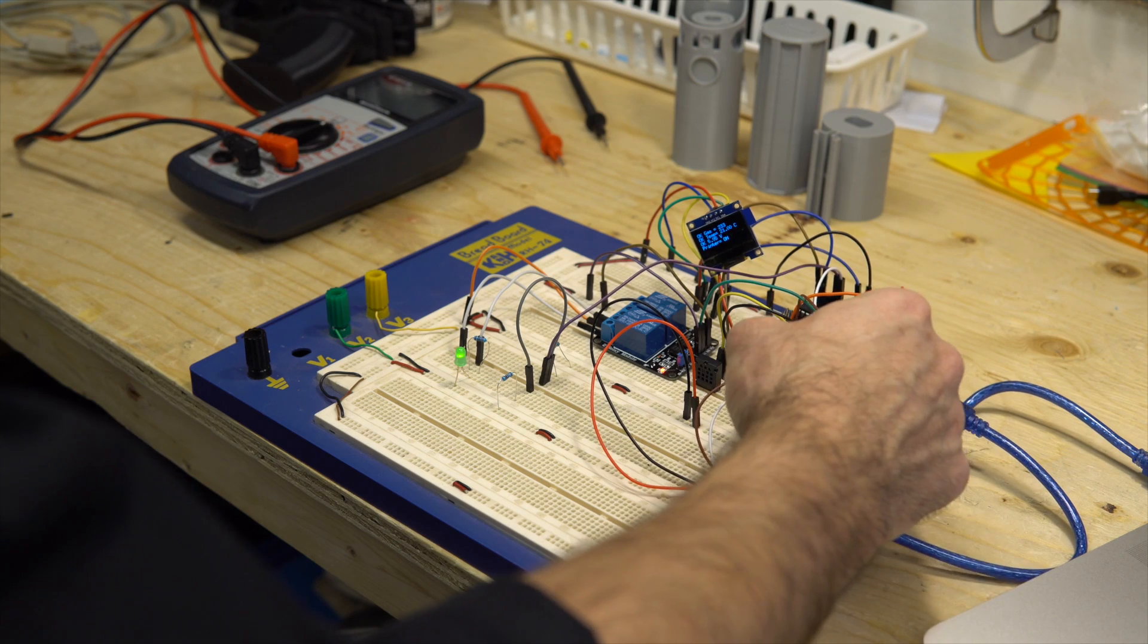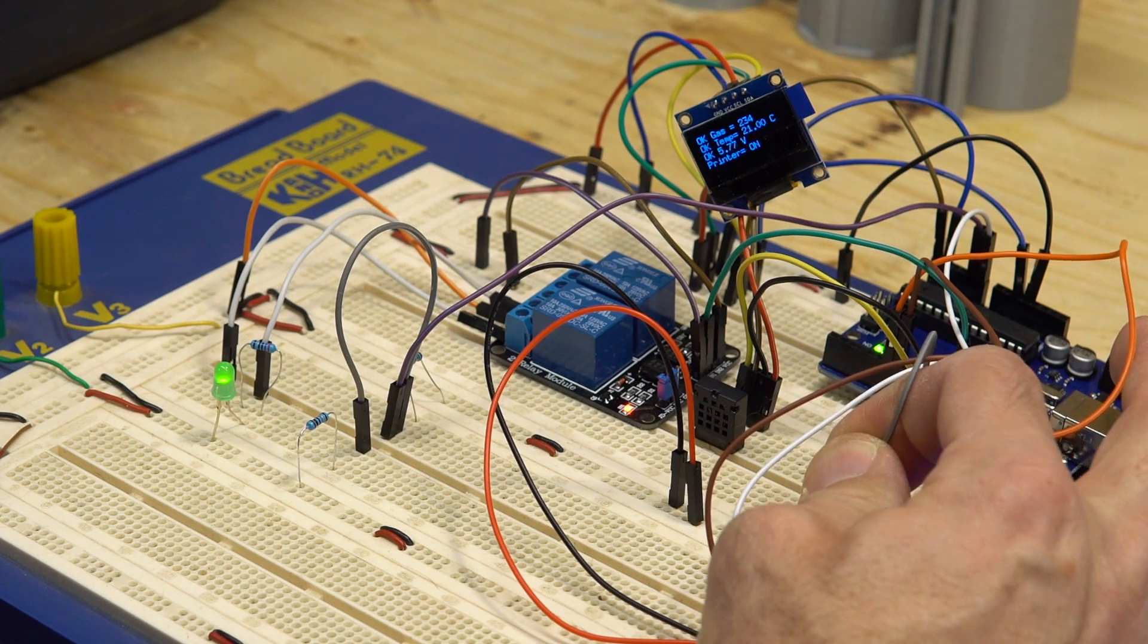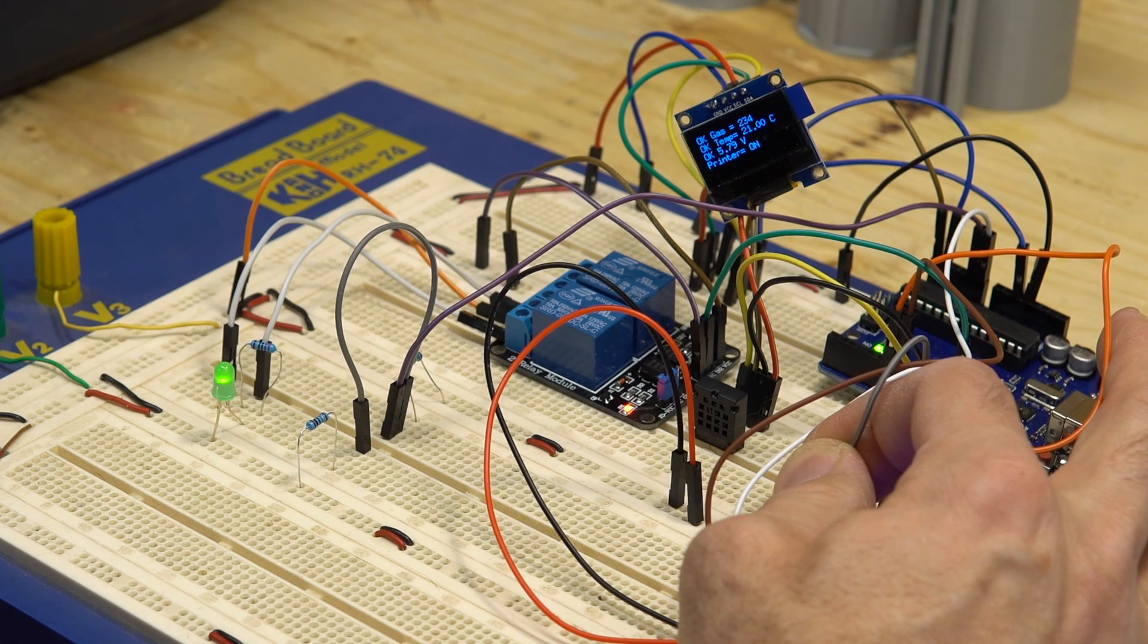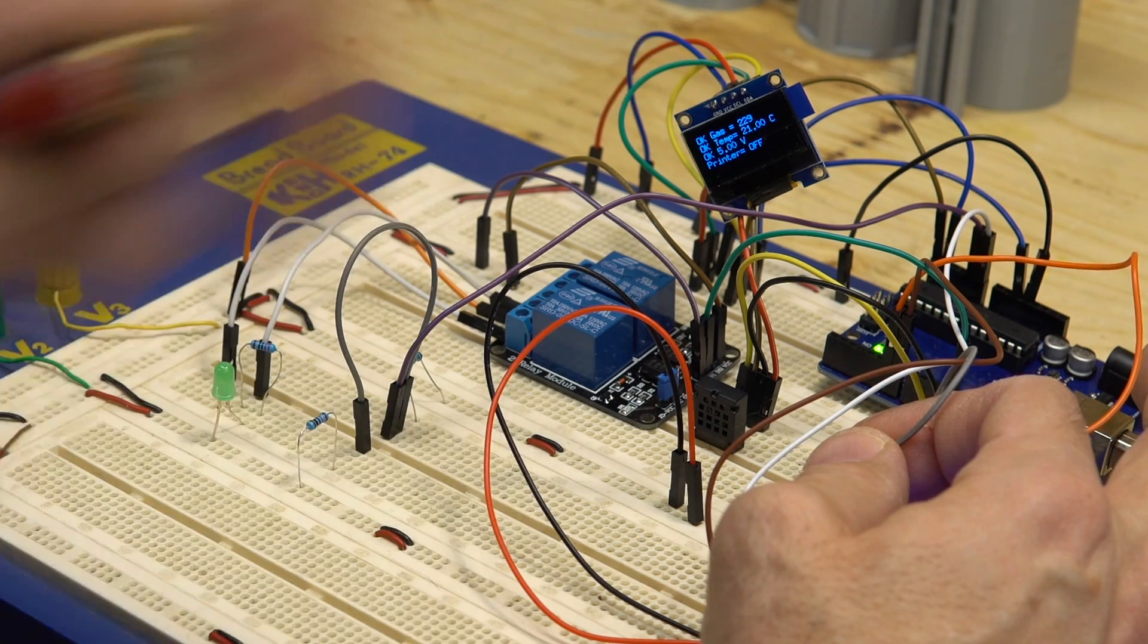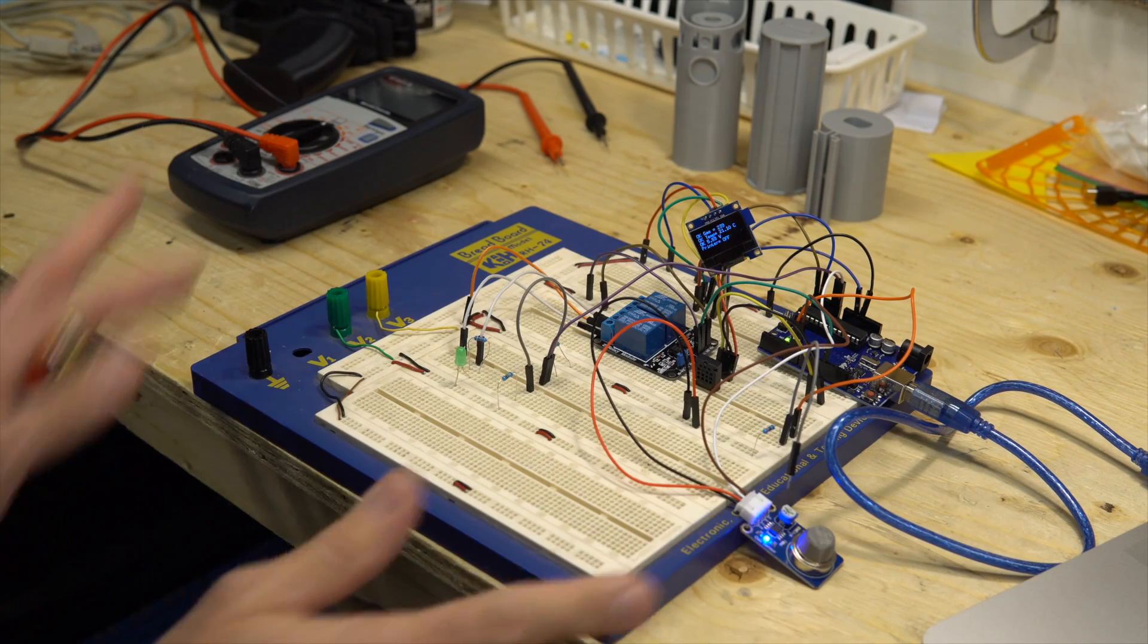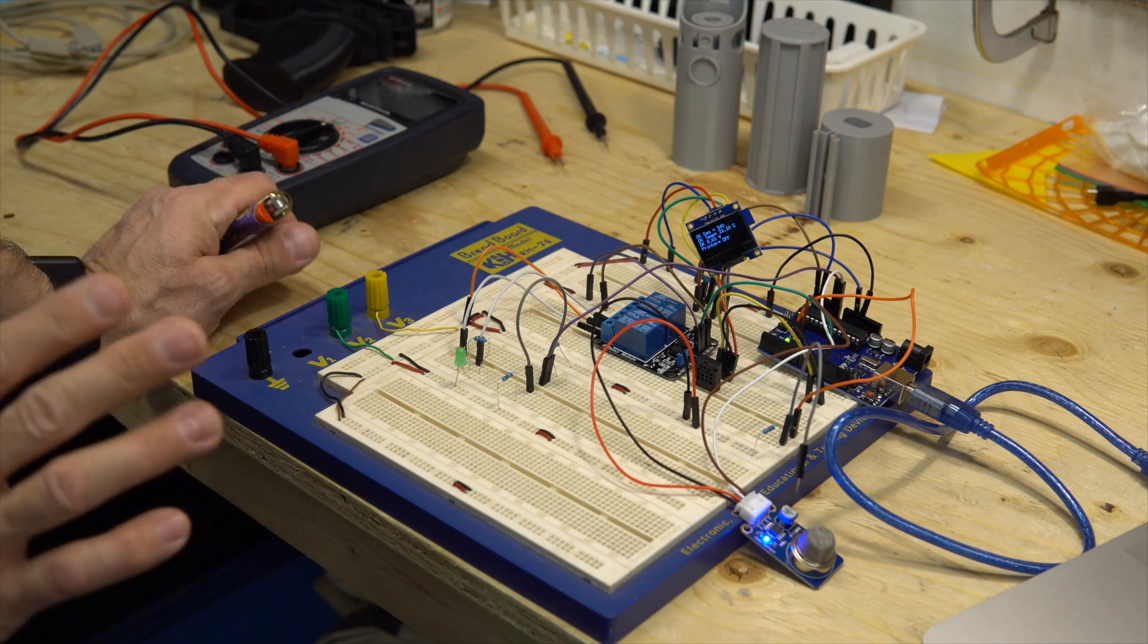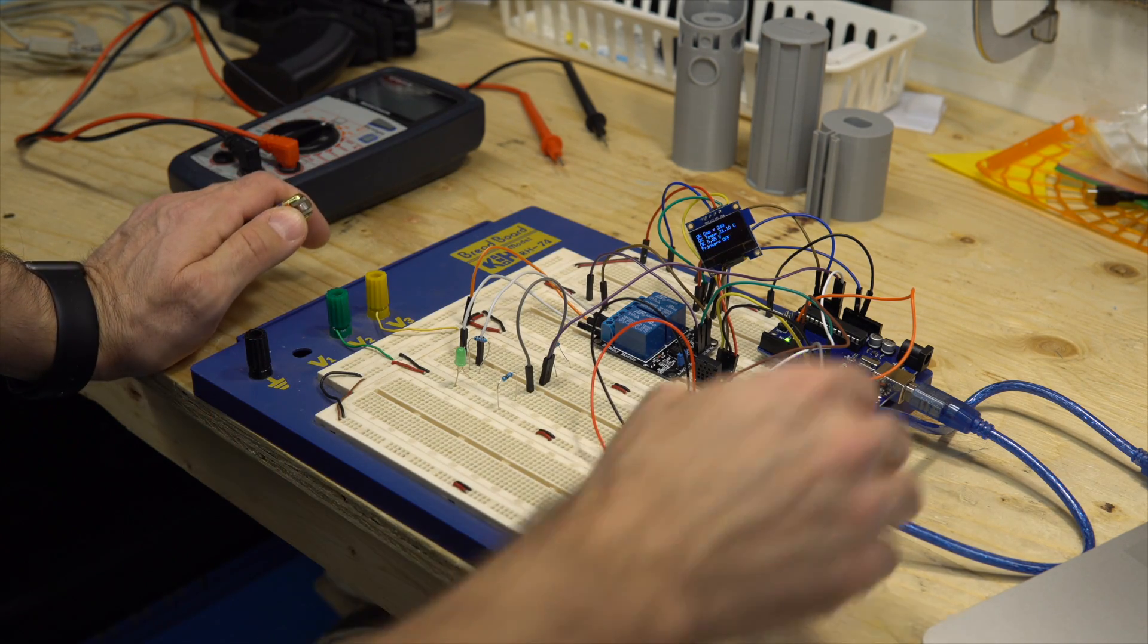But if I push it long enough, about two seconds, now the printer has come off. What I'm thinking is at first you power the system and everything is okay, so no detection of a trouble, so you just push the button, the printer comes on and you go on with your printing.